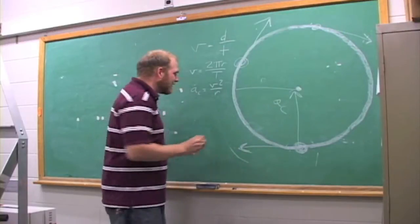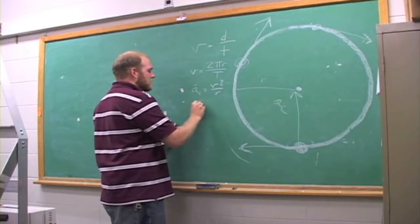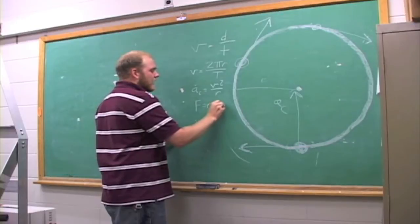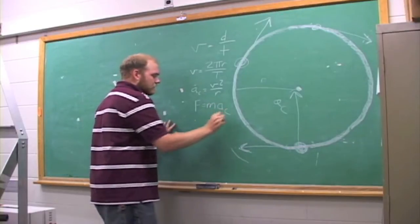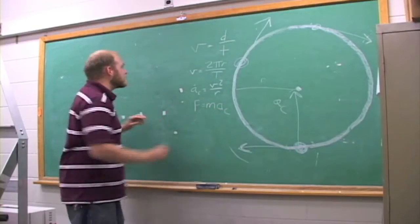By Newton's definition, this force is equal to the mass of the point mass times the centripetal acceleration. Let's combine these two equations to see what we get.